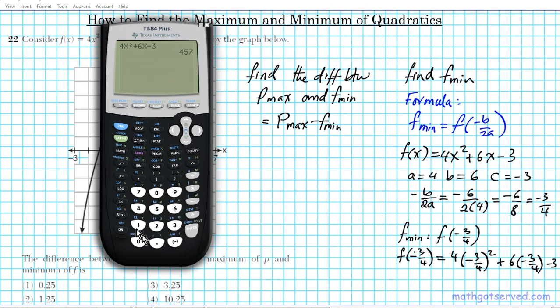So we're going to store negative 3 over 4 in X, and then let's call back the function that we just entered. Second function enter, and then we get negative 5.25.